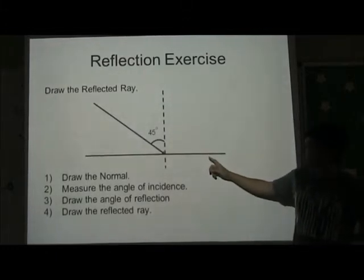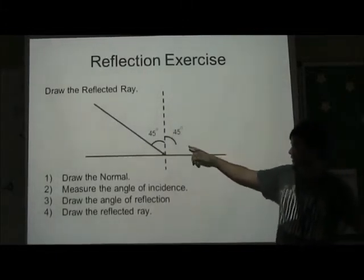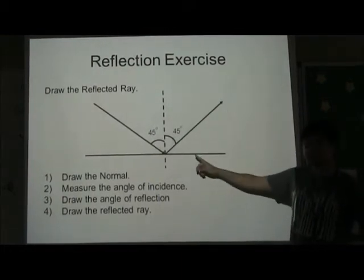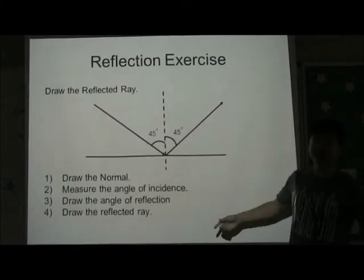So we now draw the angle of reflection, which is also 45 degrees, and we can draw the reflected ray. So these are the four steps that we need to follow when we want to draw the reflected ray.